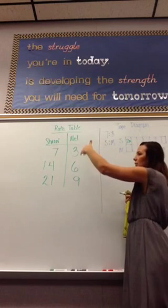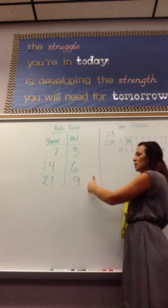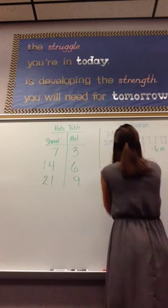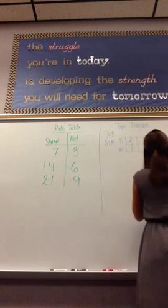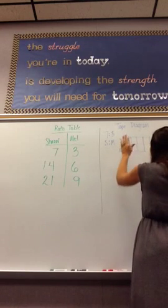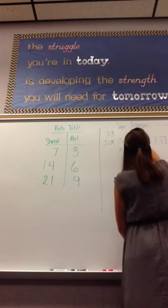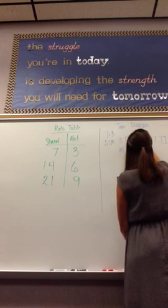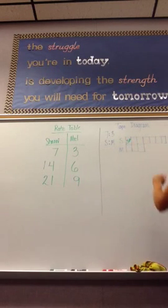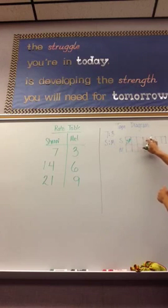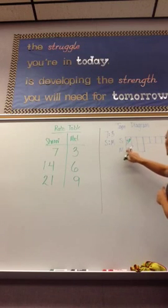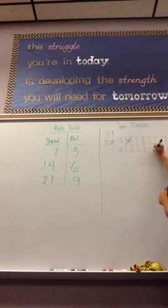A ratio table is good to use if you're just using the smaller numbers or if you just have a few sections to go. On a tape diagram, we can make each unit worth as much as we like. So, I could make this worth five miles. Then Shani's ribbon would be five, ten, fifteen, twenty, twenty-five, thirty, thirty-five miles long. And Mel's would be five, ten, fifteen miles long.